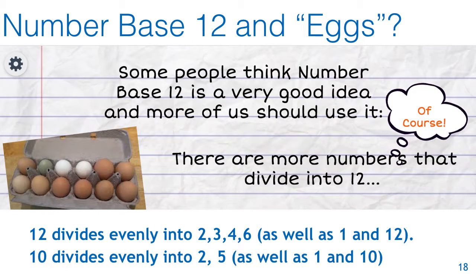One of the reasons is there are more numbers that divide into twelve. Twelve divides evenly into two, three, four, and six, as well as clearly one and twelve themselves. And ten only divides evenly into two and five. So people think that if you use number base twelve, it'd actually be easier on us all.